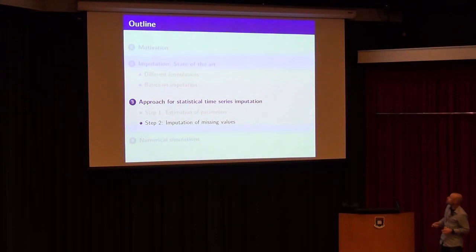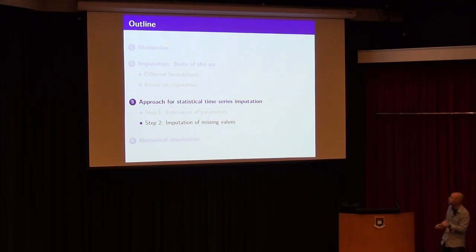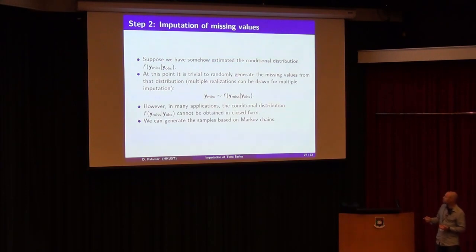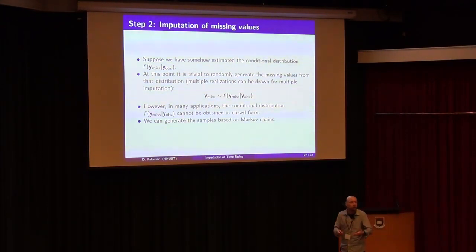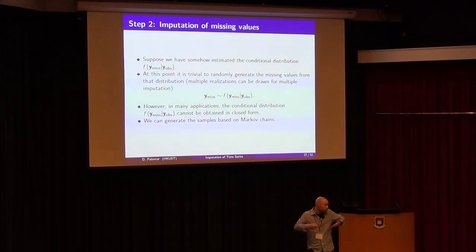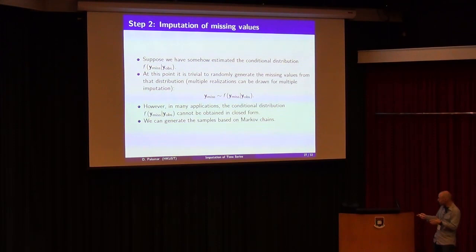Once we have characterized the PDF and estimated all the parameters, we can do the imputation. We simply draw the missing values from the conditional distribution. That gives us one imputation. If you want multiple imputations, you can do this several times to get multiple realizations.